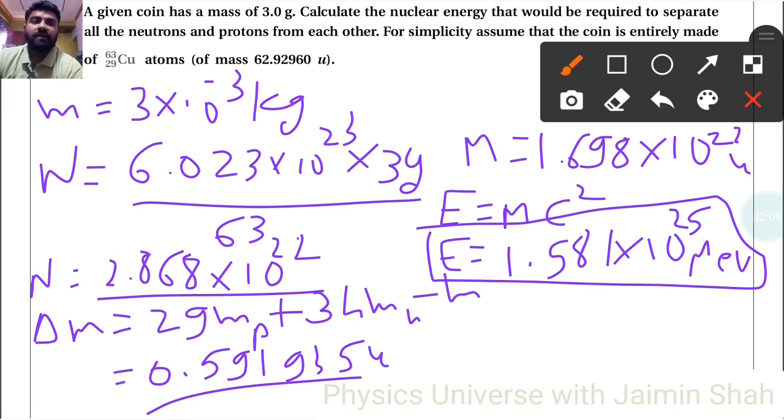Now 1 mega electron volt, right, into 10^6, so we have to convert this into joules. So to convert that into joules, put 1.581×10^25 into 10^6 into electron 1.6×10^-19, right.